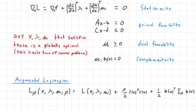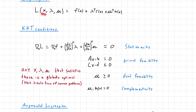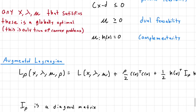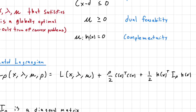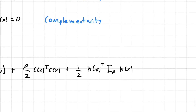Now let's look at the augmented Lagrangian. I denote it L_rho — this just means augmented Lagrangian — and it's a function of x, lambda, mu, and the new penalty parameter rho. We take our original Lagrangian and add two terms: the first is (rho/2) times the squared norm of our equality constraint function — if c(x) = 0 this is zero, otherwise we get a quadratic penalty. Likewise for inequality constraints, we have a similar term with this I_rho matrix.